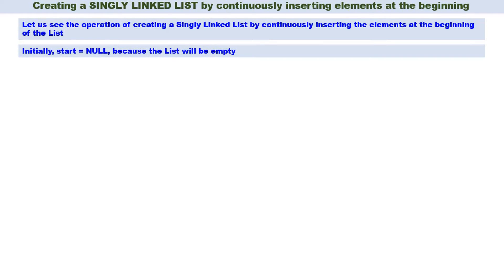Initially, start is equal to null because the list will be empty. So what is the initial value of start? Null.